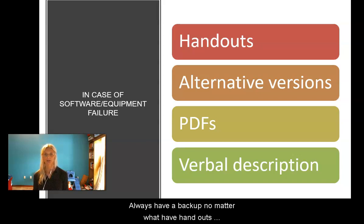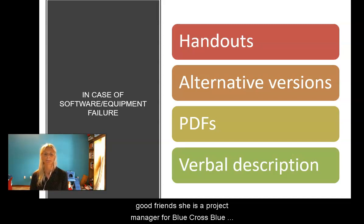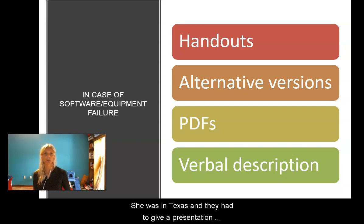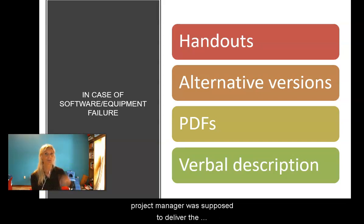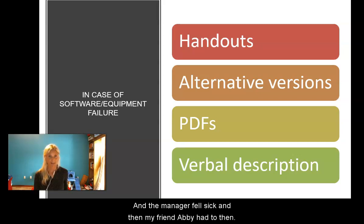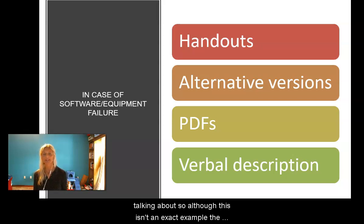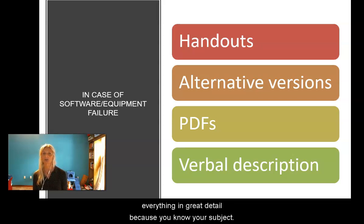In case of software or equipment failure in real life, always have a backup — handouts, alternative versions, PDFs. Be prepared to verbally describe what you were going to show. For example, a colleague of mine who is a project manager at Blue Cross Blue Shield was in Texas when her manager fell ill and she had to deliver a presentation she hadn't practiced for. She knew her subject well enough to verbally describe everything in detail. The lesson: know your subject so thoroughly that even if the system fails, you can describe it all with confidence.